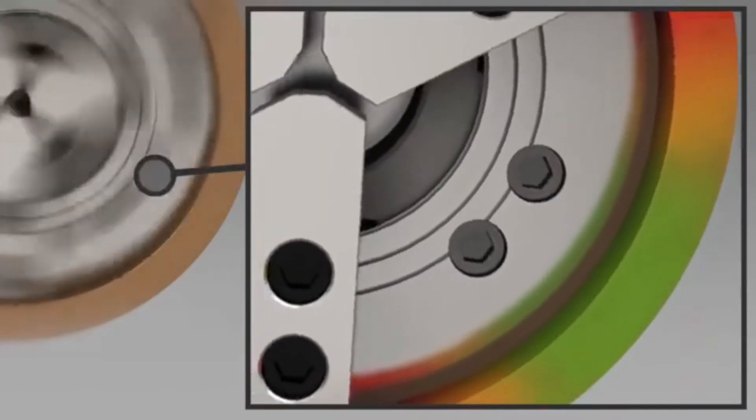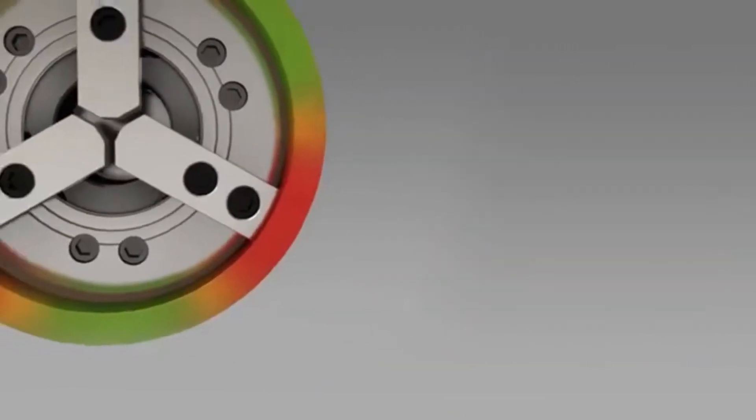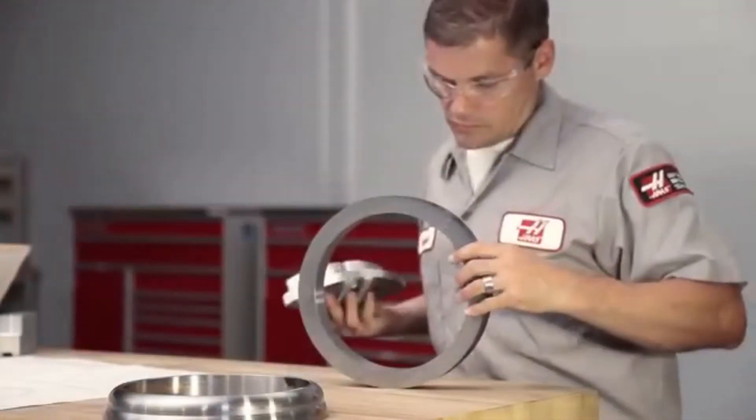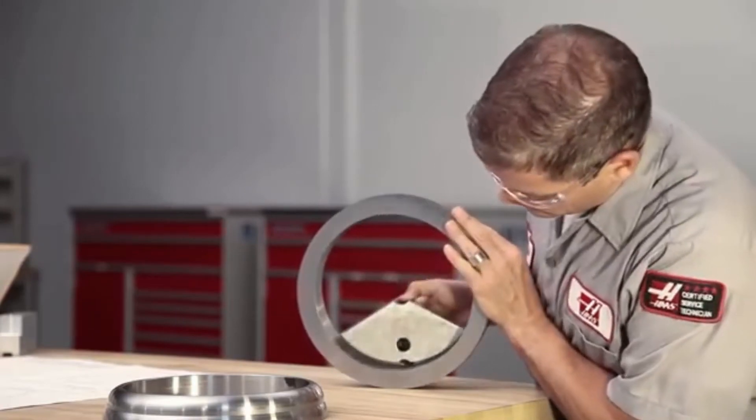Using soft jaws to hold thin walled parts at a high pressure will start to distort the part.